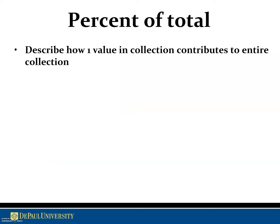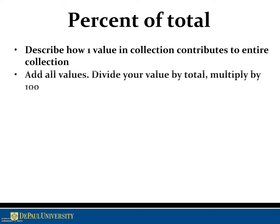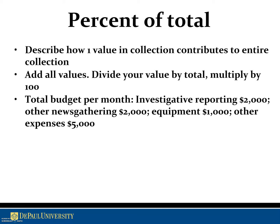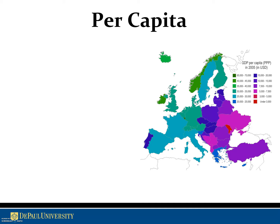Percent of total is another area we'll focus on — it describes how one value in a collection contributes to the entire collection. You add all the values, divide your specific value by the total, and multiply by 100. For example, if the total budget for investigative reporting is $10,000 and one line item is $2,000, you can calculate it represents 20% of the total budget.